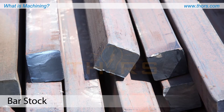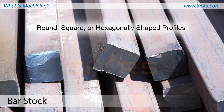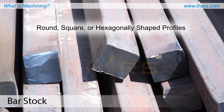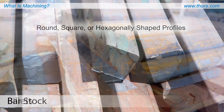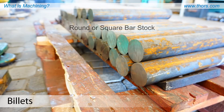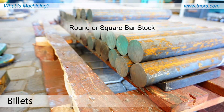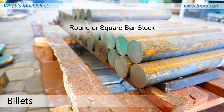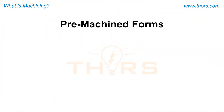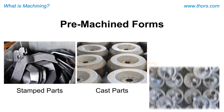Bar stock can have round, square, or hexagonally shaped profiles and typically come in different lengths. Billets are cut lengths of round or square bar stock which are slightly larger than the desired size of the finished part. Pre-machined forms can include parts that are stamped, cast, or forged.